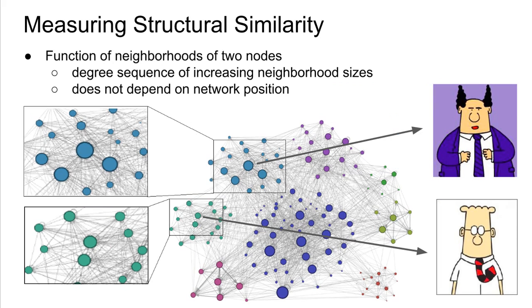In order to talk about structural identity, we need to measure structural similarity, and for us this is going to be a function of the neighborhood of the nodes. Nodes that have similar neighborhoods of increasing sizes will be considered similar even if they are very far apart in the network.